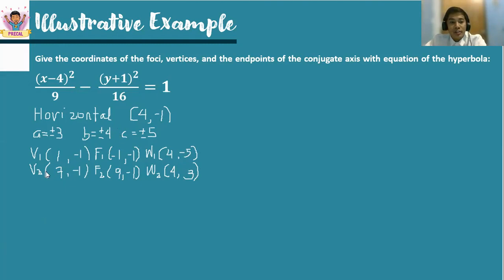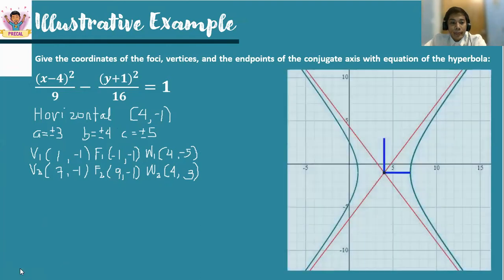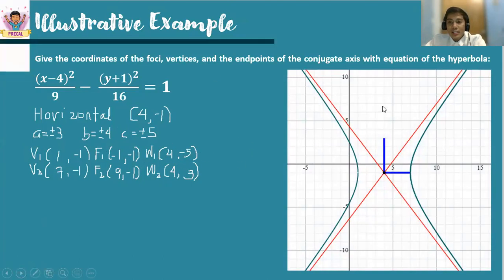So these are now the important points in the hyperbola: b sub 1, b sub 2, f sub 1, f sub 2, w sub 1, and w sub 2. This is the sample graph. Observe the conjugate axis and the transverse axis drawn in color blue. The center is located at (4, negative 1), which is on the fourth quadrant.